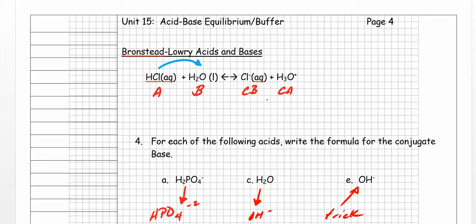Now let's look at it from right to left, because this is an equilibrium going back and forth. On the right-hand side we have conjugate acid and conjugate base. H₃O⁺ is donating a proton to Cl⁻ going right to left — it goes from H₃O⁺ to H₂O — so that makes H₃O⁺ the conjugate acid. And Cl⁻ is the conjugate base, since it's on the right-hand side.